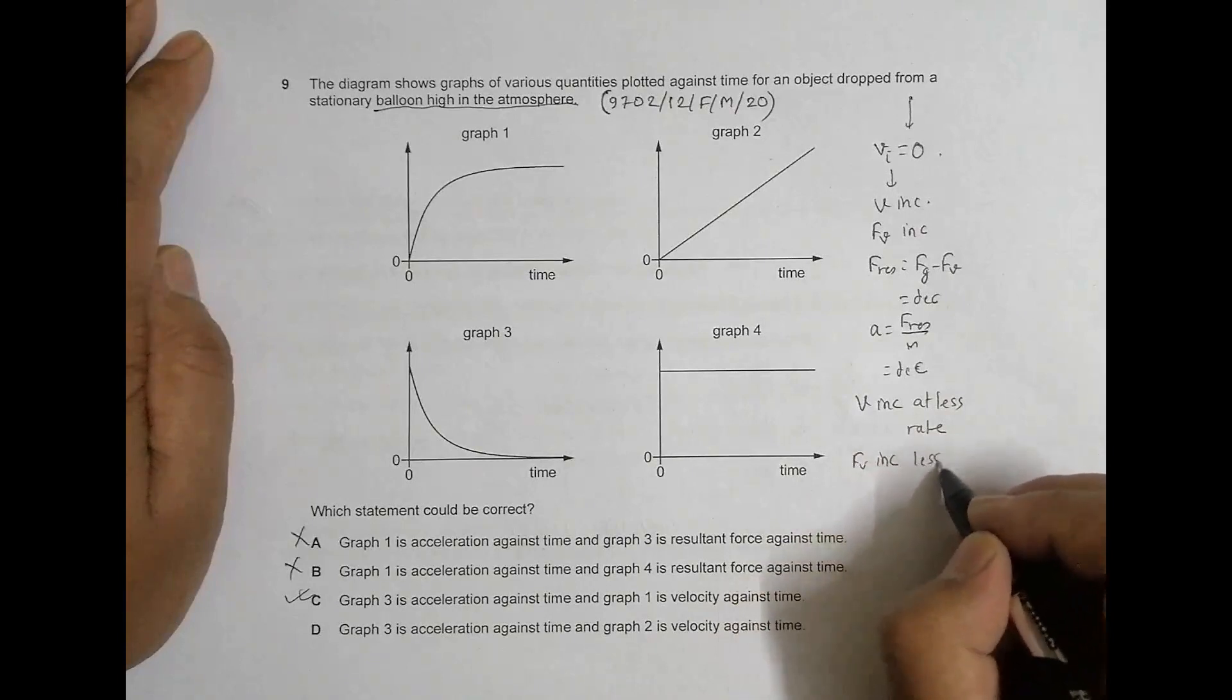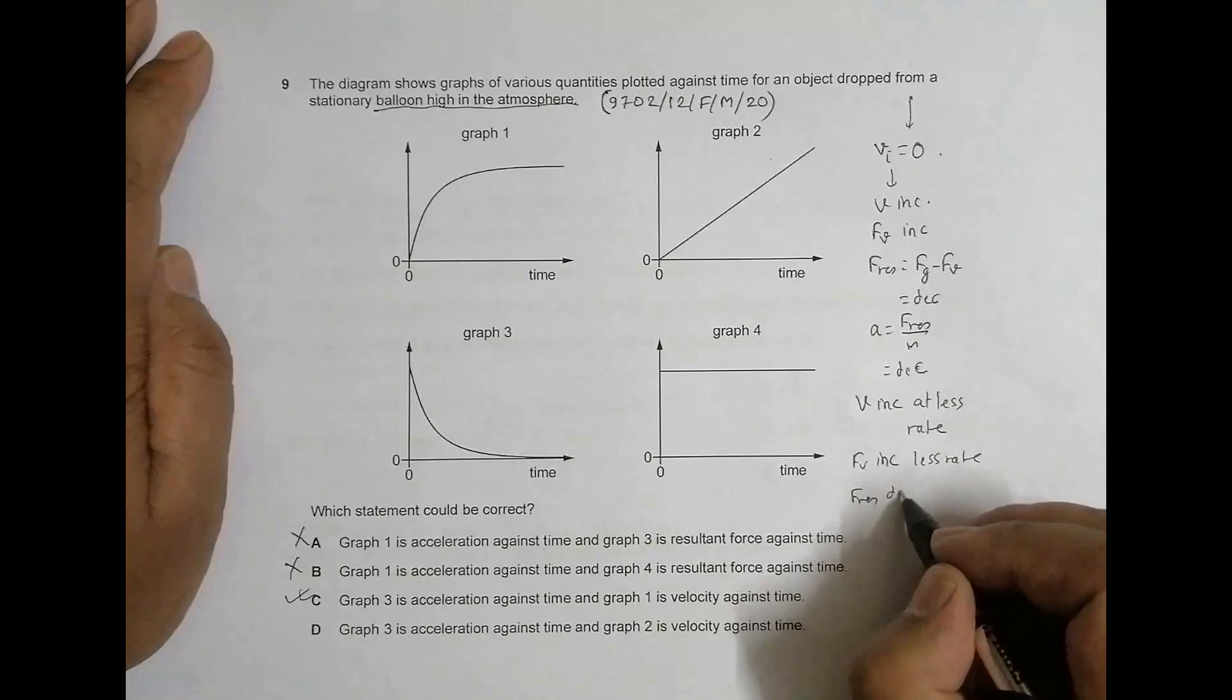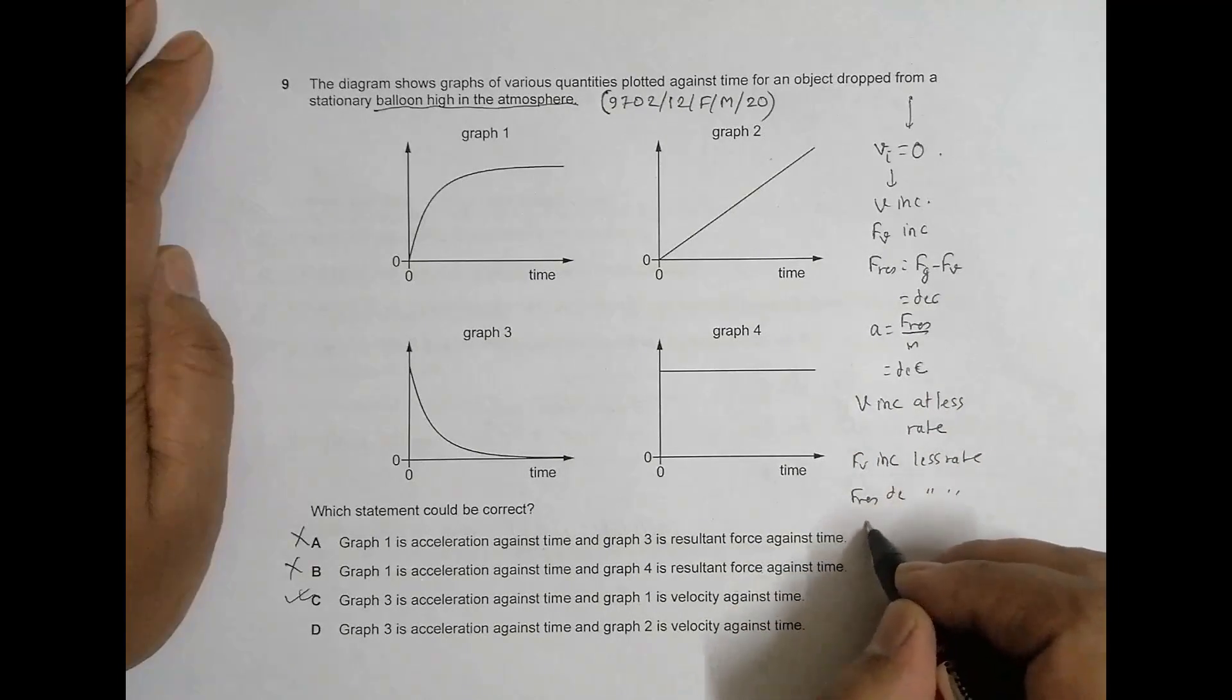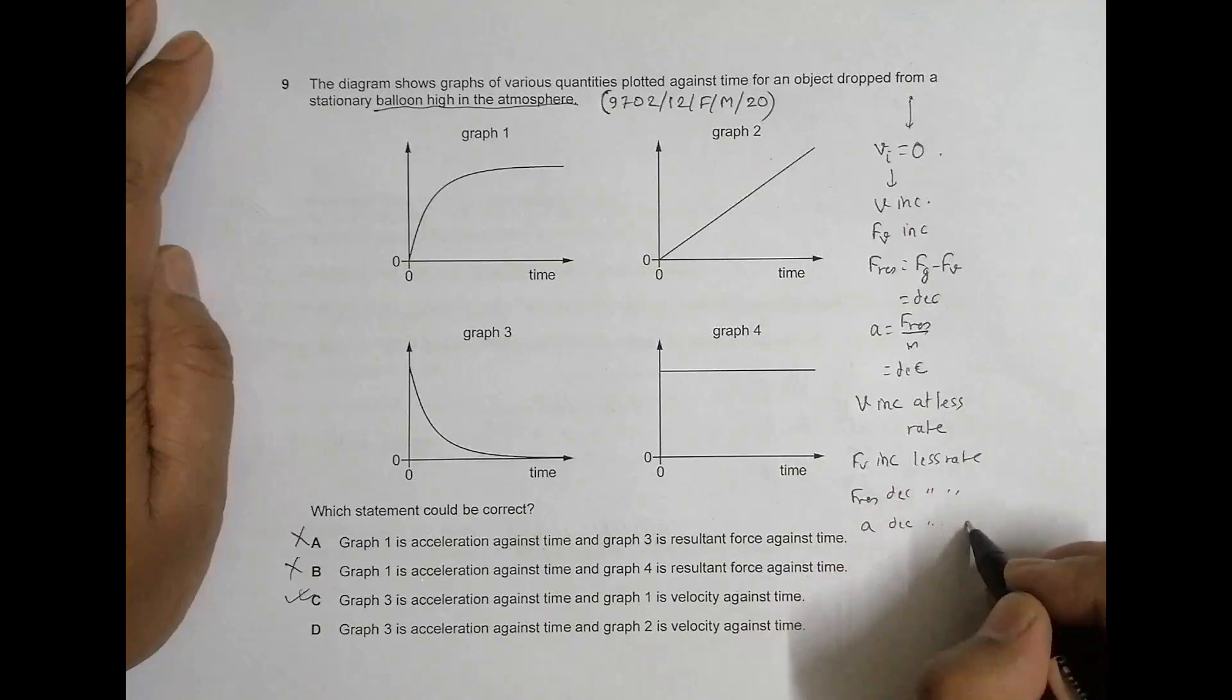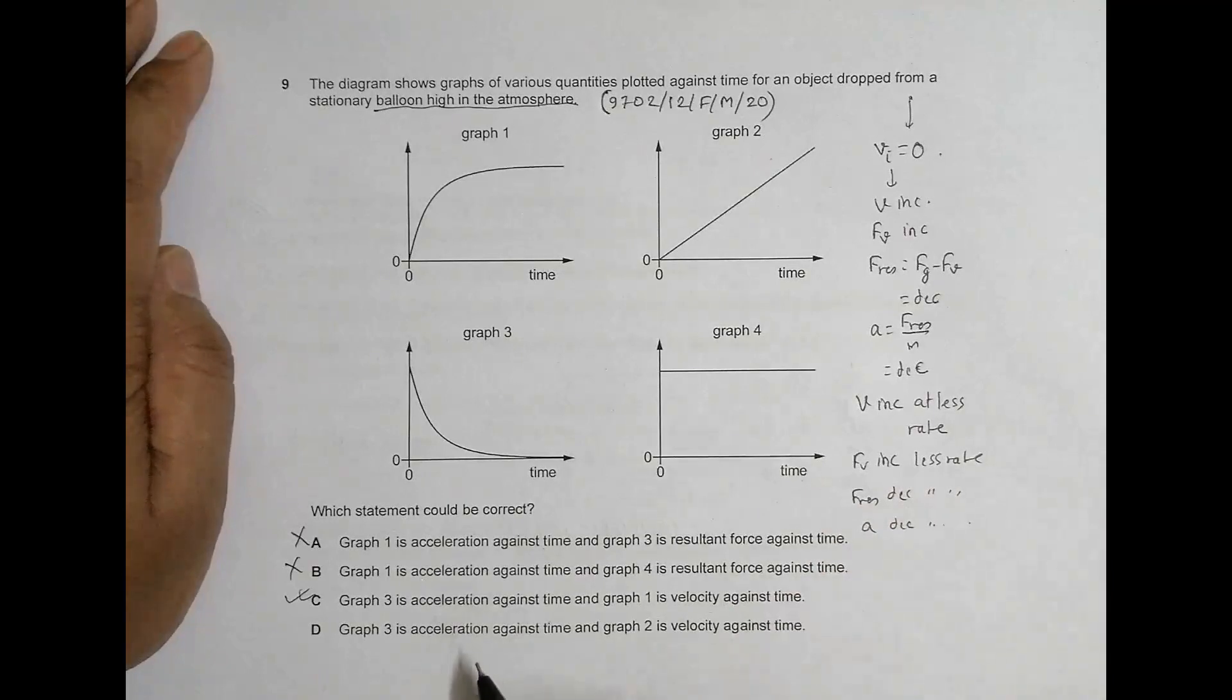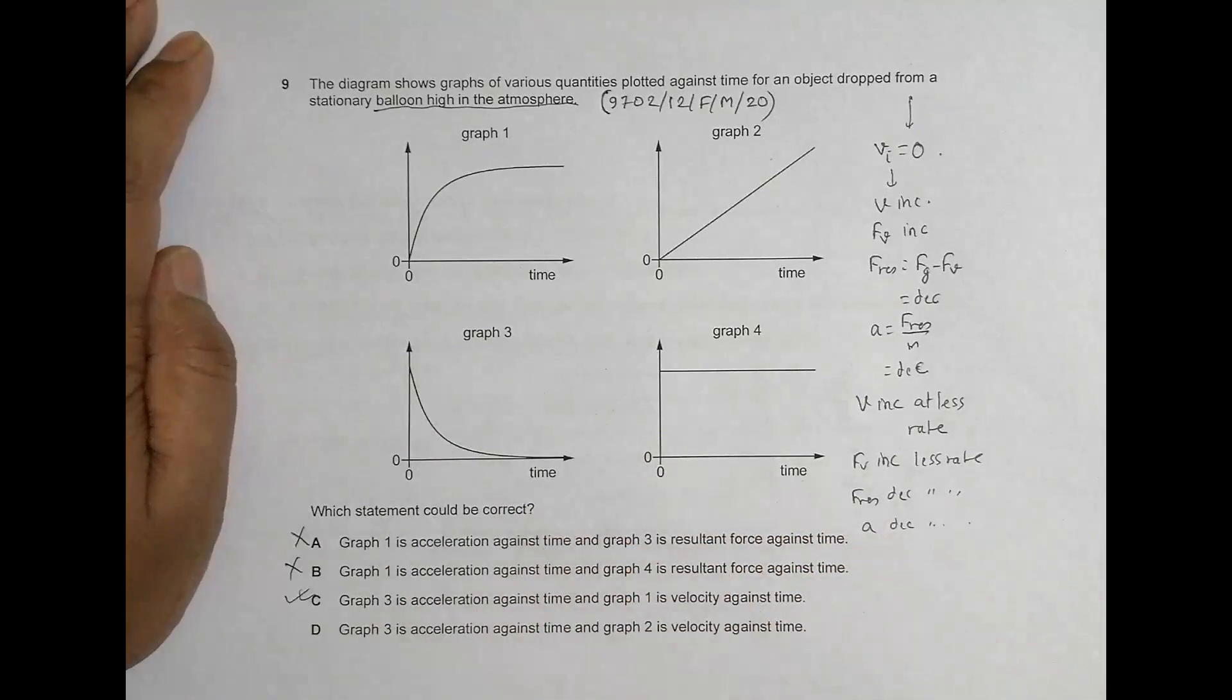Which means that v increases but at less rate, which means that F resultant should decrease but at less rate, which means a decreases at less rate.